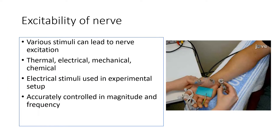Excitability is a property of any tissue or cell by which it can react to the external or internal environment. The nerve is highly excitable, and this property is acquired because of the fluctuation of ions across the cell membrane, leading to the generation of action potential. The nerve can be stimulated by any type of stimuli: thermal, electrical, mechanical, or chemical.